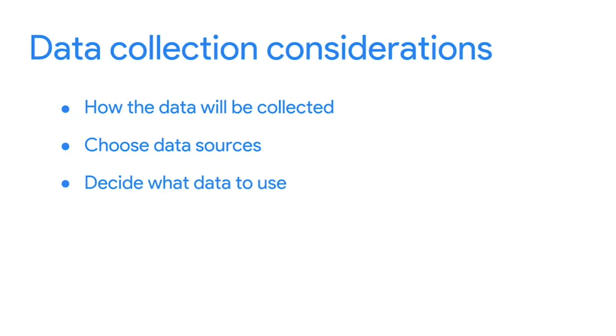The same can't always be said about third-party data, or data collected from outside sources who did not collect it directly. This data might have come from a number of different sources before you investigated it, so it might not be as reliable. But that doesn't mean it can't be useful. You'll just want to make sure you check it for accuracy, bias, and credibility. No matter what kind of data you use, it needs to be inspected for accuracy and trustworthiness. The data you choose should apply to your needs and it must be approved for use. As a data analyst, it's your job to decide what data to use — choosing the data that can help you find answers and solve problems, and not getting distracted by other data.